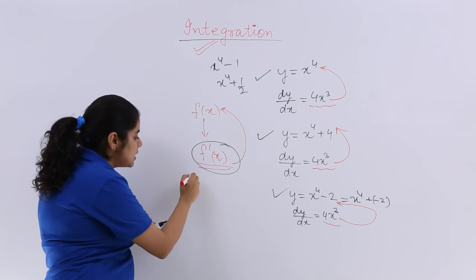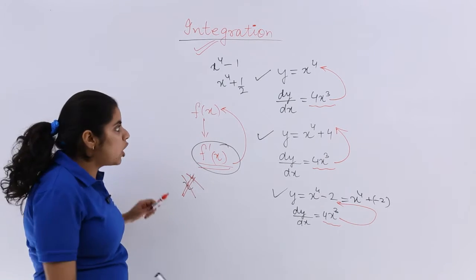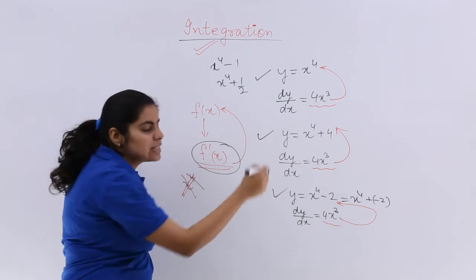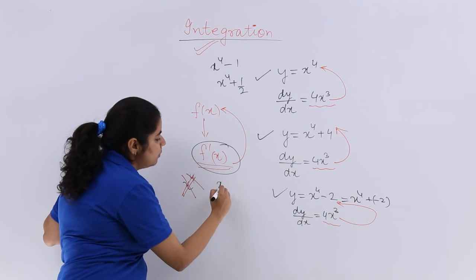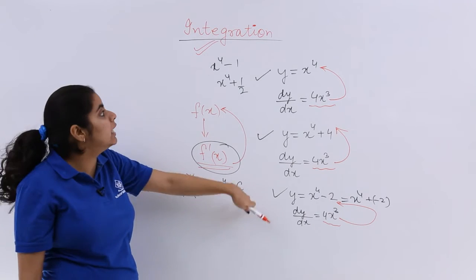But if x raised to the power 4 only is there, that is a problem. Because what about all these answers then?